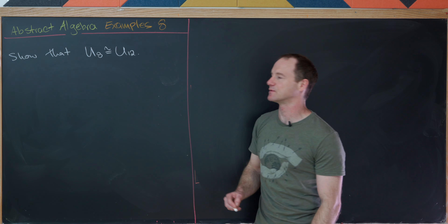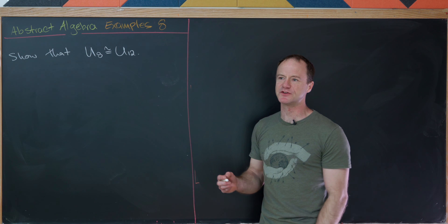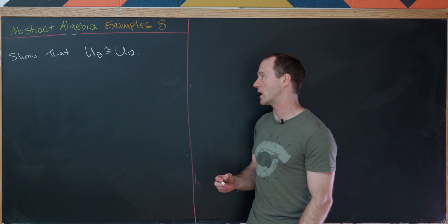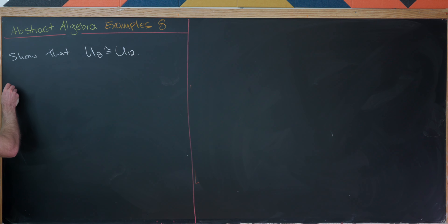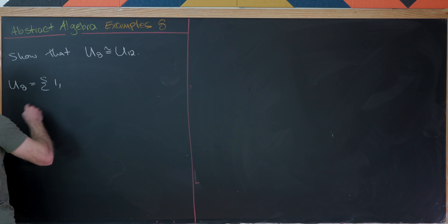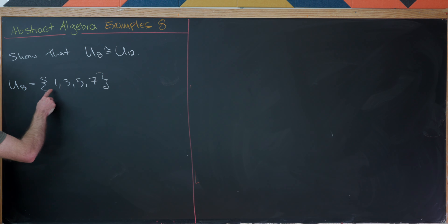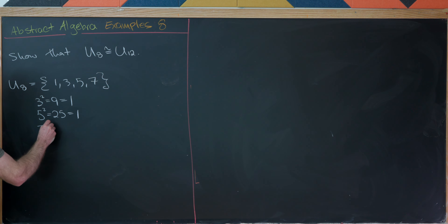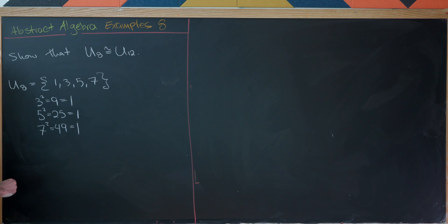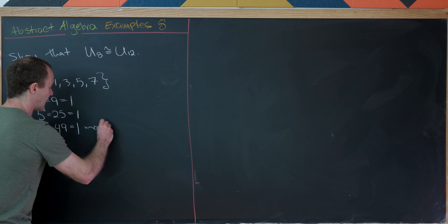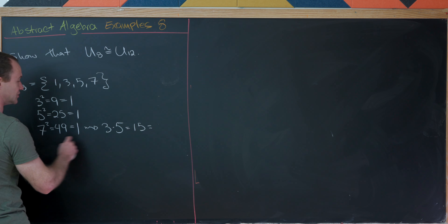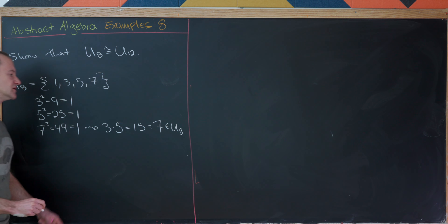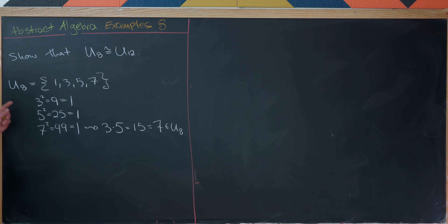For our next example, we'll show that U8 is isomorphic to U12 — the multiplicative group mod 8 versus the multiplicative group mod 12, keeping numbers relatively prime to each. U8 contains 1, 3, 5, and 7. Notice that everything is its own inverse: 3²=9=1, 5²=25=1, and 7²=49=1 in U8. Furthermore, 3×5=15=7 in U8, so 7 can be written in terms of generators 3 and 5.